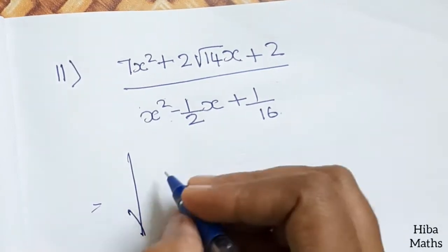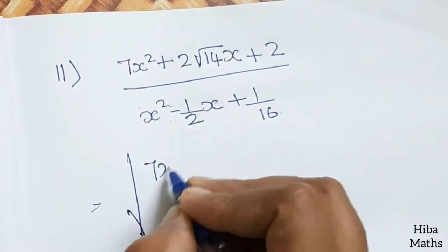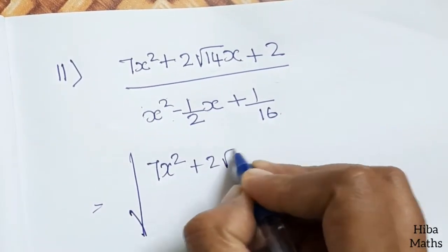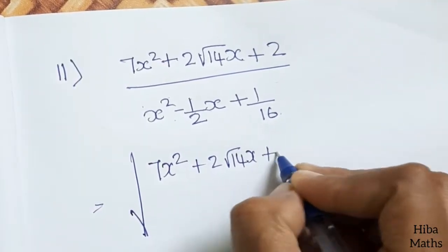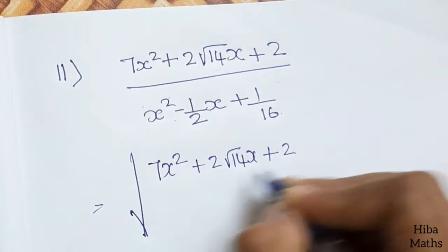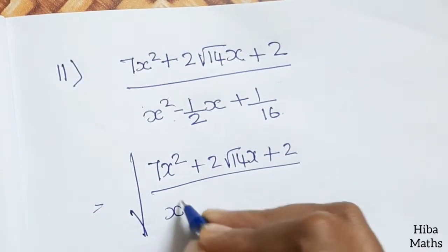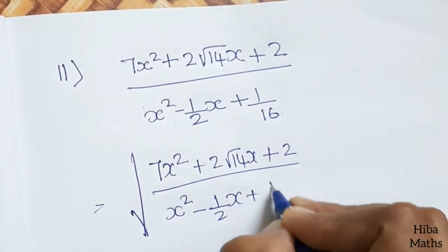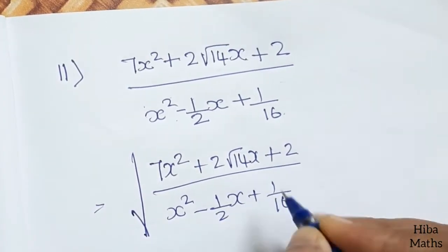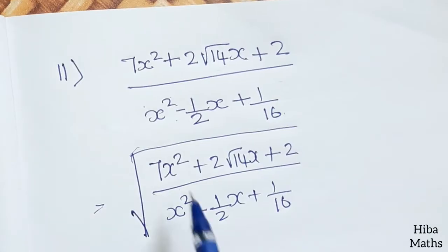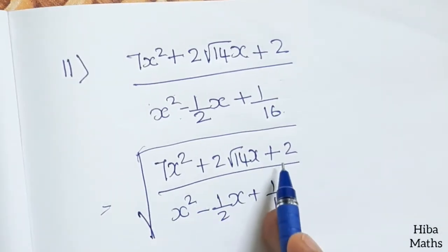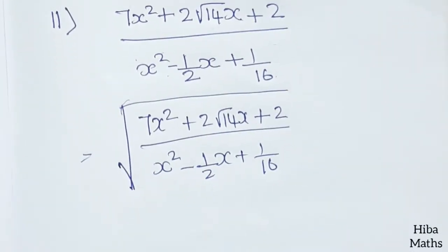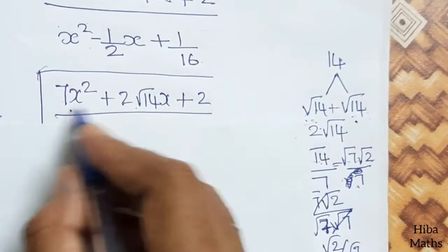Question 2: find the square root of 7x² + 2 root 14x + 2, divided by x² minus 1 by 2x plus 1 by 16. We will factorize both the numerator and the denominator.